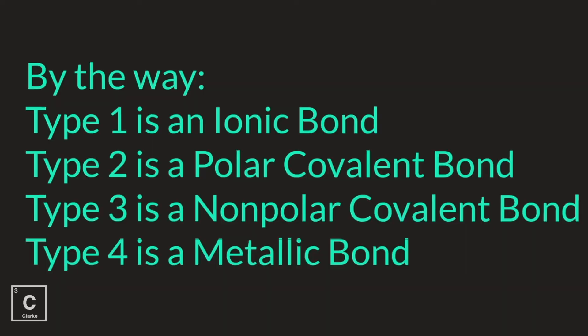Until next time, bye y'all! Now, by the way, type 1 is an ionic bond, type 2 polar covalent bond, type 3 were non-polar covalent bonds, type 4 is a metallic bond.